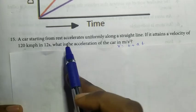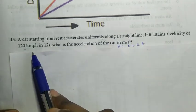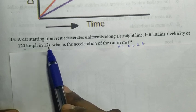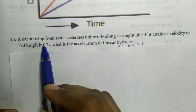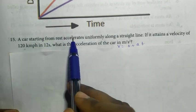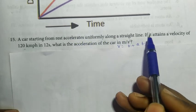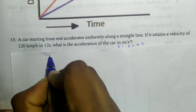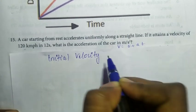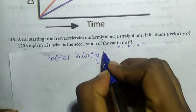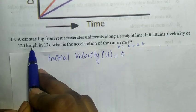Fifteenth question: A car starting from rest accelerates uniformly along a straight line. If it attains a velocity of 120 km per hour in 12 seconds, what is the acceleration in meter per second squared? Initial velocity u = 0 (starts from rest).